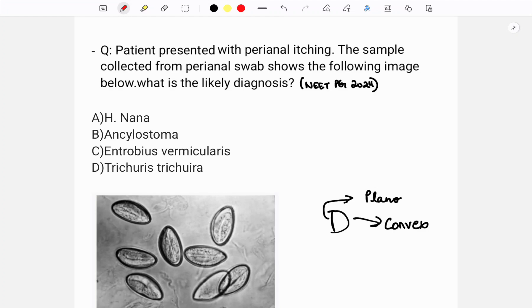Hopefully you have answered this question. This is a very short question, but in longer questions you might have to pick out the important keywords. The main keyword here is perianal itching. From this only, without even seeing the pictures, you can answer the question. The answer is Enterobius vermicularis.